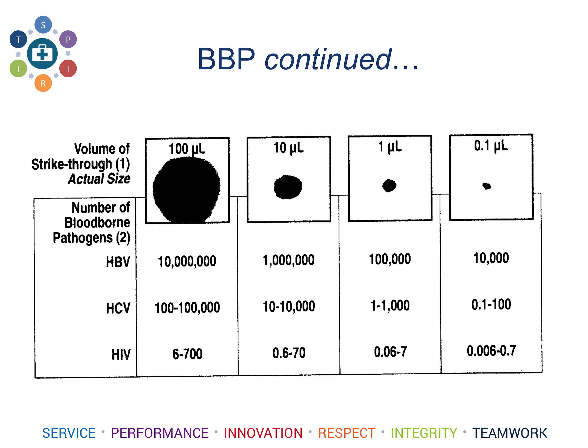On this slide, you can see the amount of viral particles in a drop of blood. In 100 microliters — a large drop of blood — there are 10 million Hepatitis B particles, 100 to 100,000 Hepatitis C particles, and only 600 to 700 HIV particles. This would be akin to a large nosebleed. Moving to the figure on the right, 0.1 microliters of blood — the amount in the tip of a butterfly needle should you get a needle stick — has significantly fewer viral particles. Your risk of HIV is 6,000 to 7 hundredths, so very low. However, there are still 10,000 Hepatitis B viral particles.